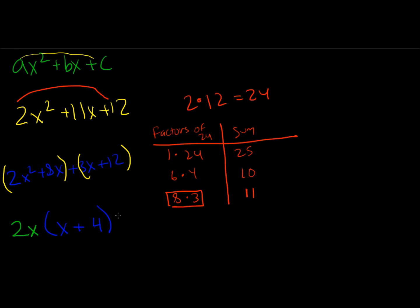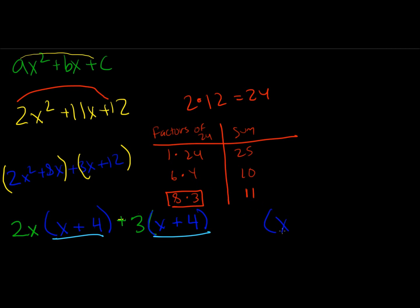Now for the second group, 3x plus 12, the greatest common factor is 3. Dividing both terms by 3 leaves us with x plus 4. We can see that both groups share the common factor x plus 4, so we pull that out. That leaves us with 2x plus 3 as the other factor, giving us the final factorization: (x plus 4)(2x plus 3).